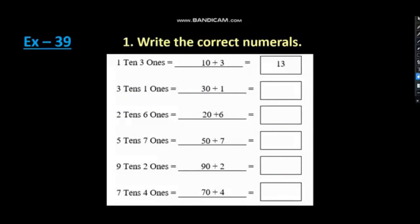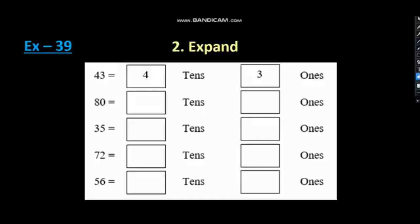Let's do the next one. Number 2. Expand. What do you have to do here? Here we have 43. You have to place them in a place value. You know, tens place and ones place. So, we have 43. 4 will go to tens place. 4 tens. And, 3 will go to ones place. 3 ones, okay?